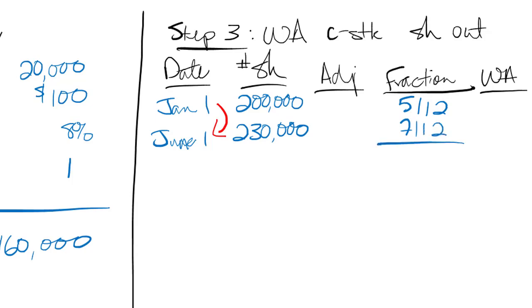Our fraction then, five twelfths from January to June. June to the end of the year is seven twelfths. You can count that if you want to. June, July, August, September, October, November, December. That gives me my 12 out of 12. So I'm good. 200,000 times five twelfths. We'll just round to the nearest share. And 230 times seven twelfths. 134,167. If I add those up, I end up with my weighted average shares, 217,500.